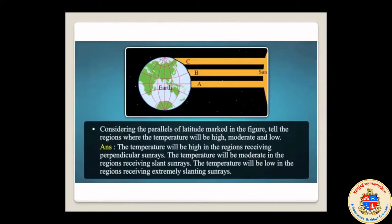The temperature will be high in the region receiving perpendicular rays. On the equator, A rays are perpendicular, so the temperature is very hot. The temperature will be moderate in the region receiving slant sun rays. The B rays fall on the Earth at a slight slant, so the temperature there is a little bit lower. The C rays fall on the North Pole, occupying a larger area and being extremely slant, which is why their temperature is very low.